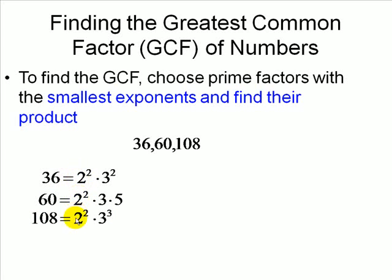We see 2 is common among all of these numbers, but the exponent is 2. So 2 squared is one of those prime factors. Next we have 3, which is common to all these numbers; however, the smallest exponent is 1. Therefore, we have 2 squared times 3. Note that 2 squared is the smallest among the numbers with base 2, and 3 has an exponent of 1, which is the smallest exponent associated with these three numbers. Therefore, 12 is the greatest common factor among 36, 60, and 108.